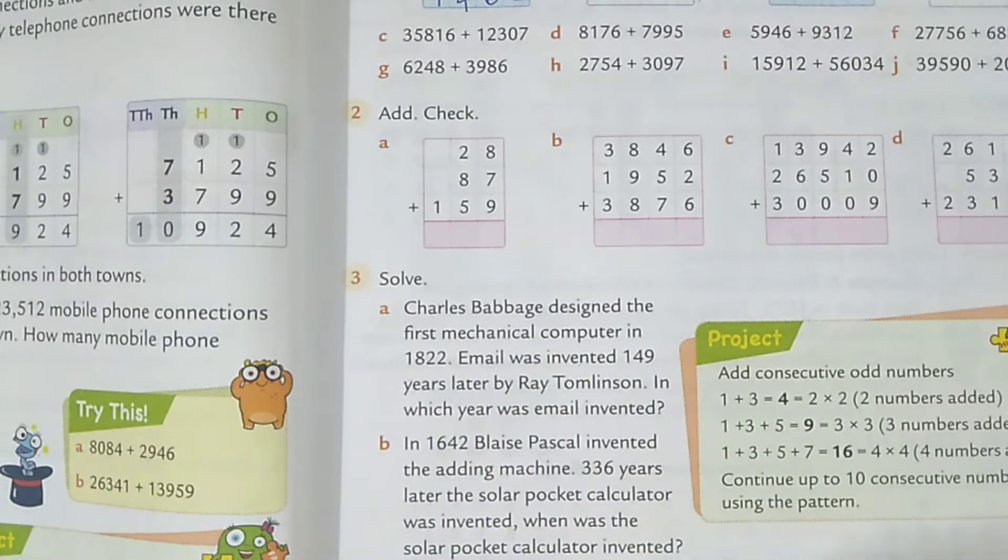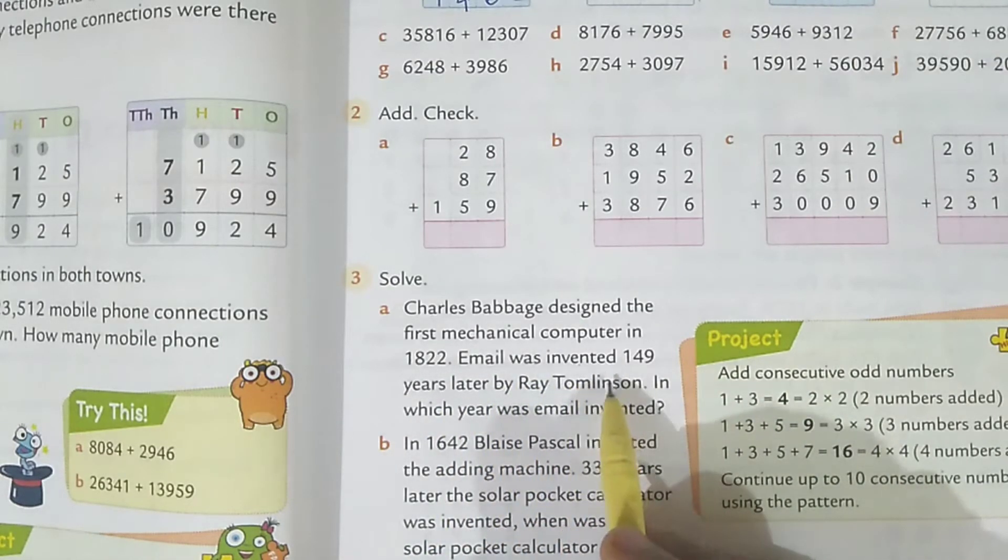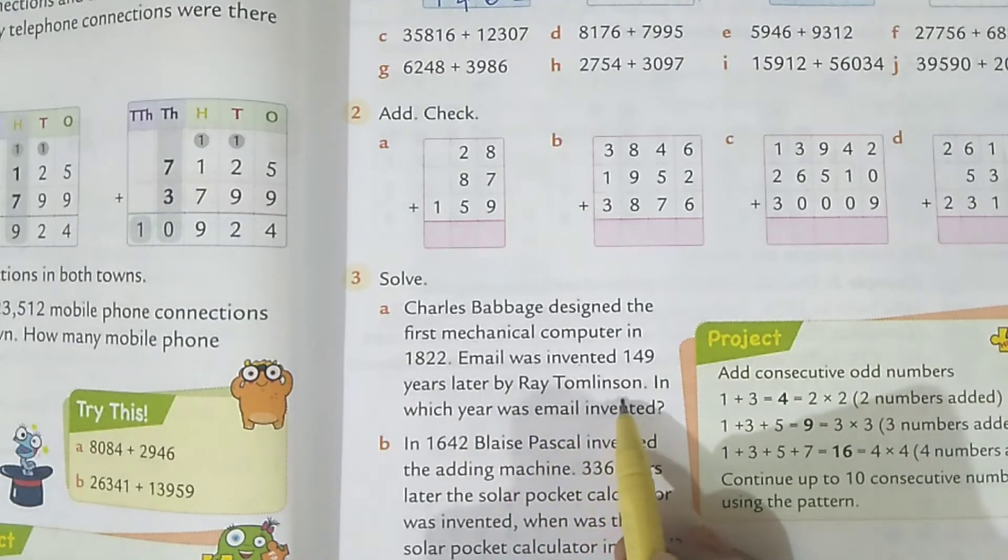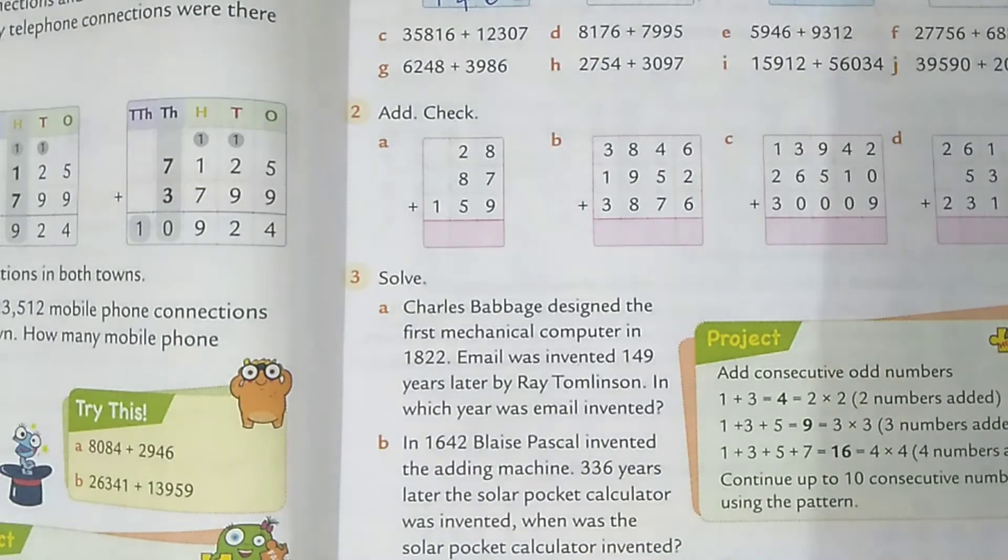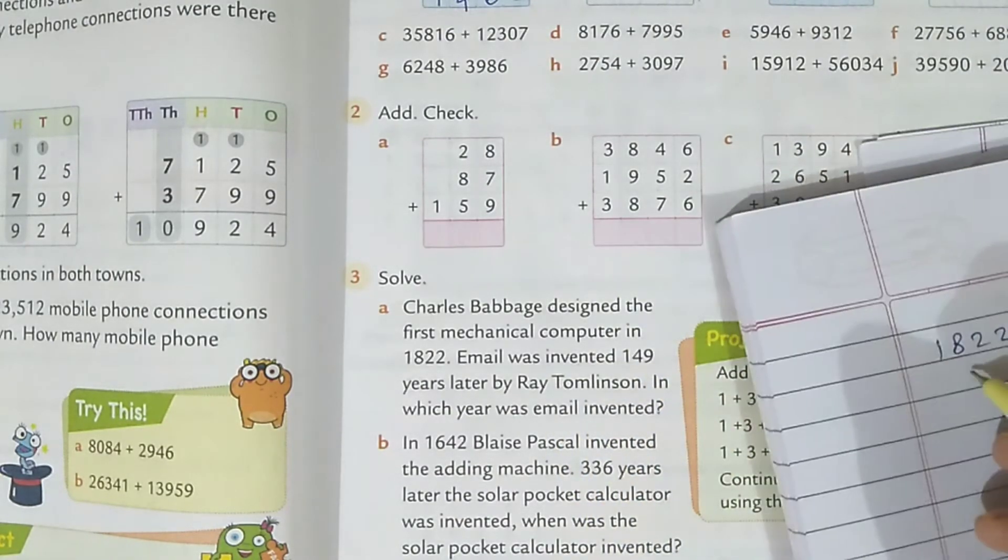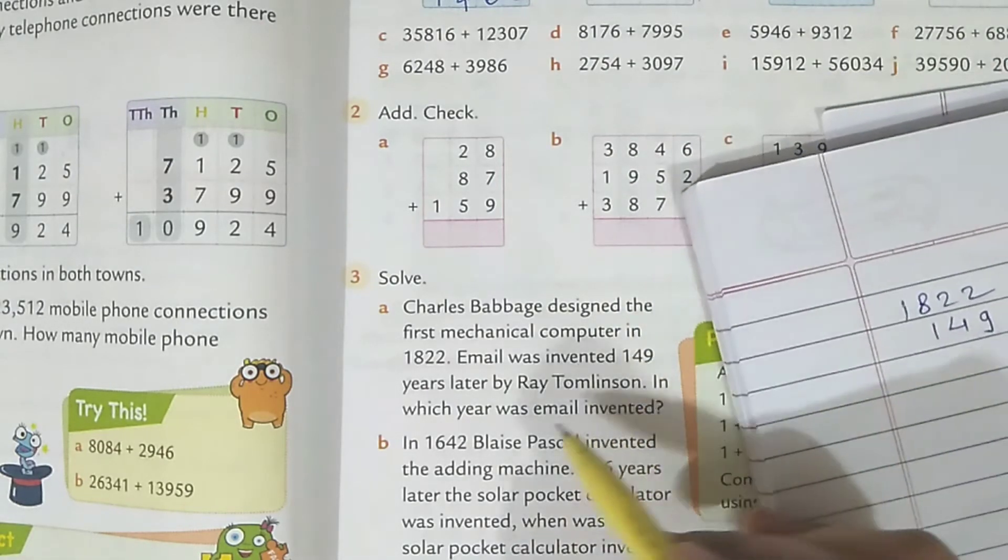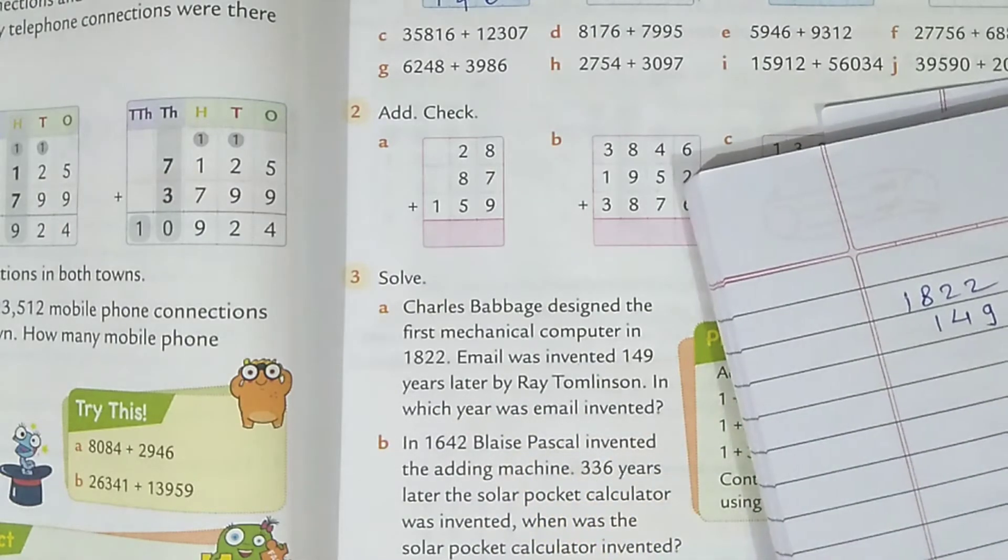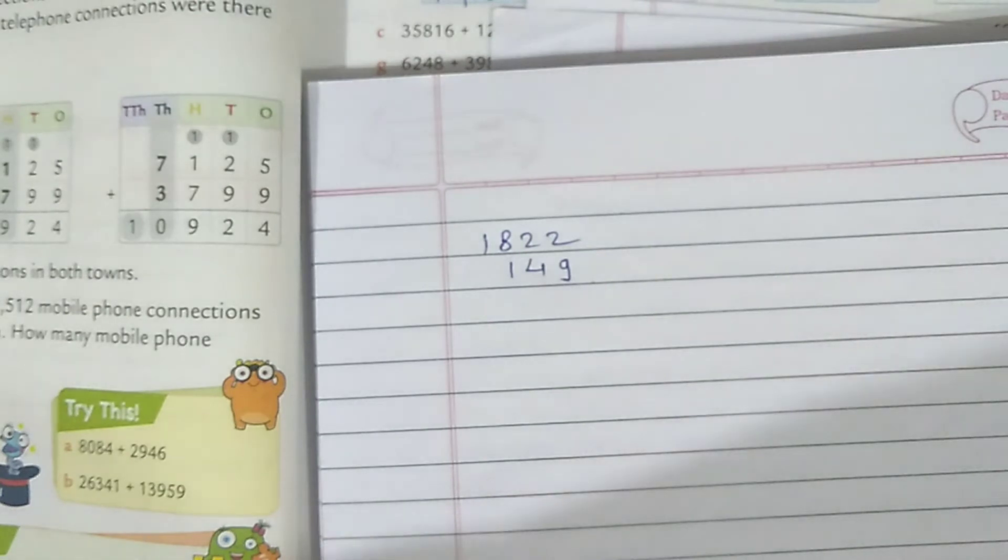The computer was invented in 1822, and email was invented 149 years later by Ray Tomlinson. In 1822 the computer was invented, and 149 years later, what was invented? In which year was the email invented? So, this is a simple word problem.